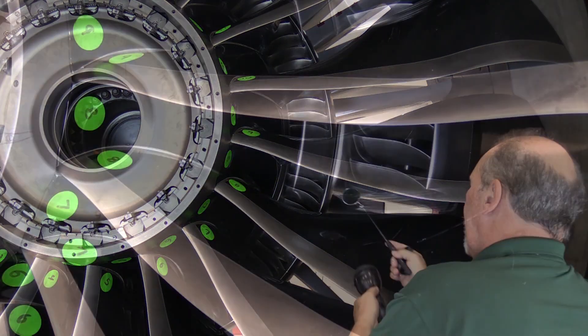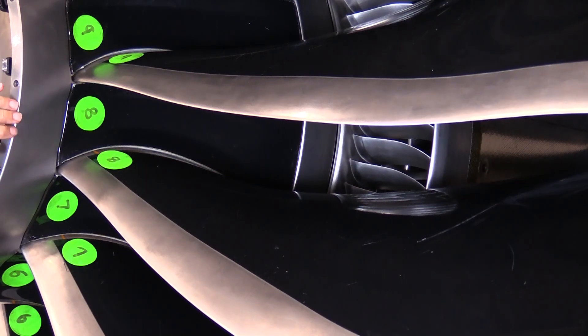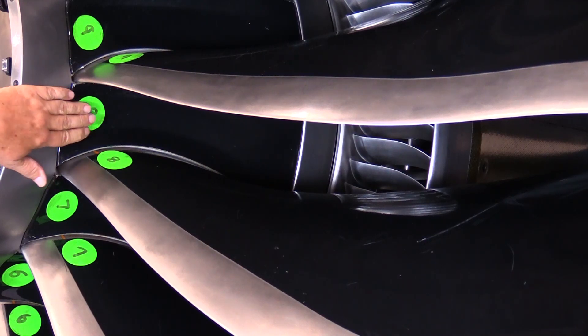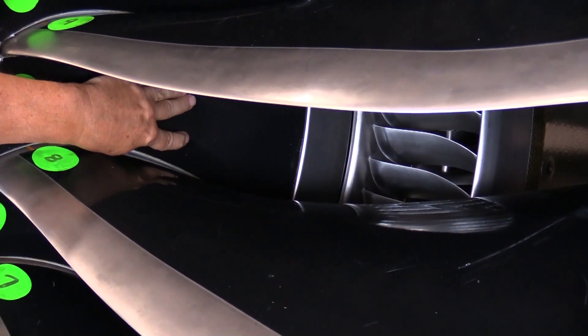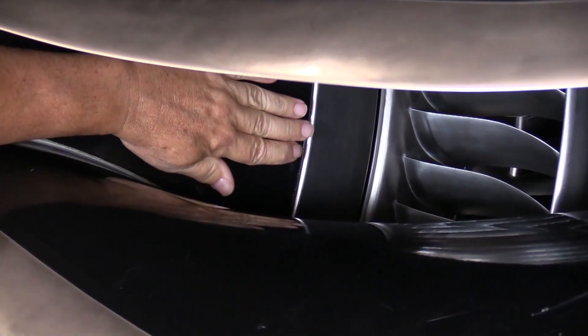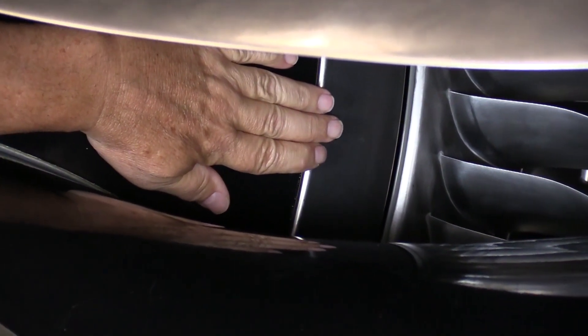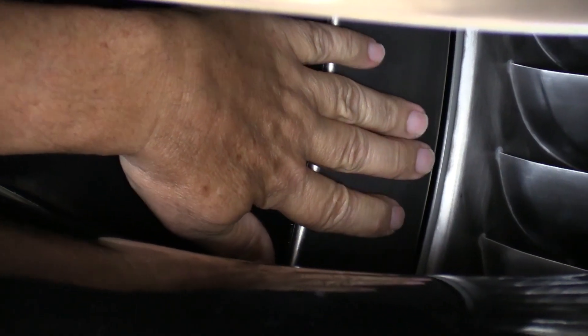Another way to do the inspection is with your hand. From the support ring to the front of the platform should be a smooth transition. As we follow the platform back with our hand, there should also be a smooth transition from the trailing edge of the platform to the flow spacer. This indicates a good installation.